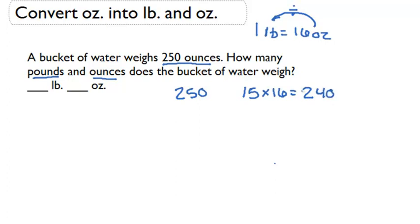And we're going to know that that's the biggest multiple of 16 that we can have that's still under 250. So that means I'm going to have 15 whole pounds, and then I'm still going to have some ounces left over. So to figure out how many ounces I have left over,